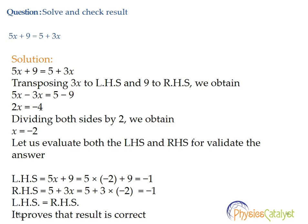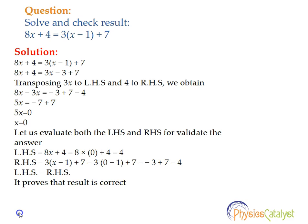The other part of the question is to check the result. Let us evaluate both the left-hand side and right-hand side to validate the answer. The left-hand side is 5x + 9; substituting x = −2 gives −1. For the right-hand side, 5 + 3x: substituting x = −2 gives 5 + 3(−2) = −1. Both sides are equal, so our result is correct.